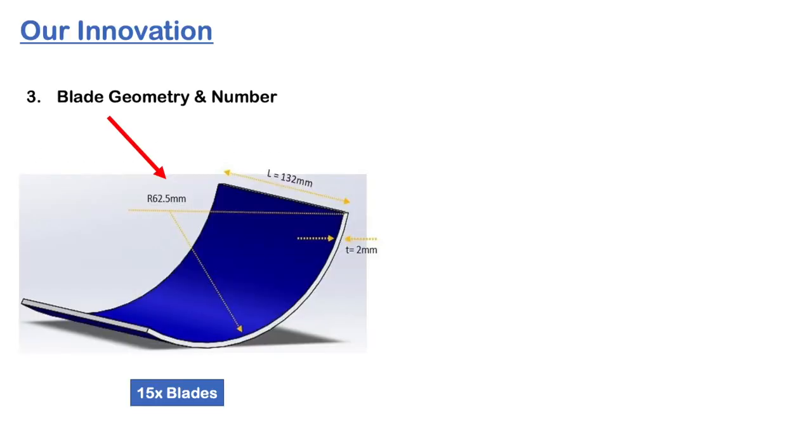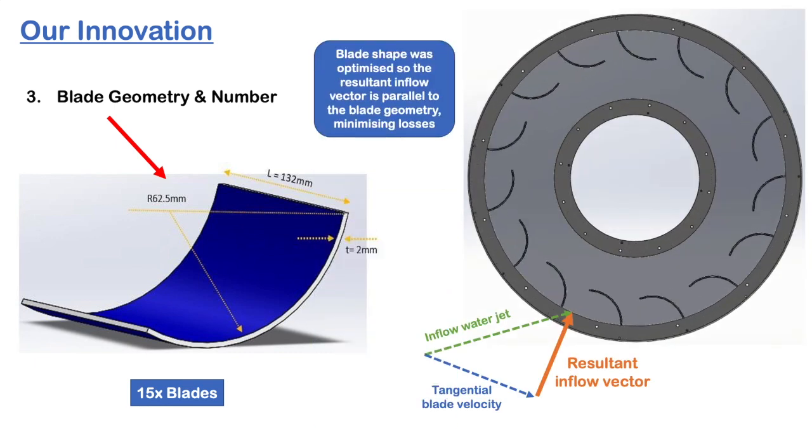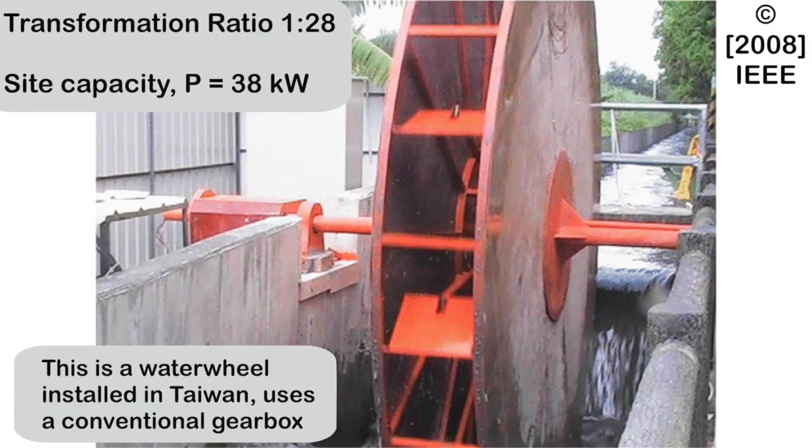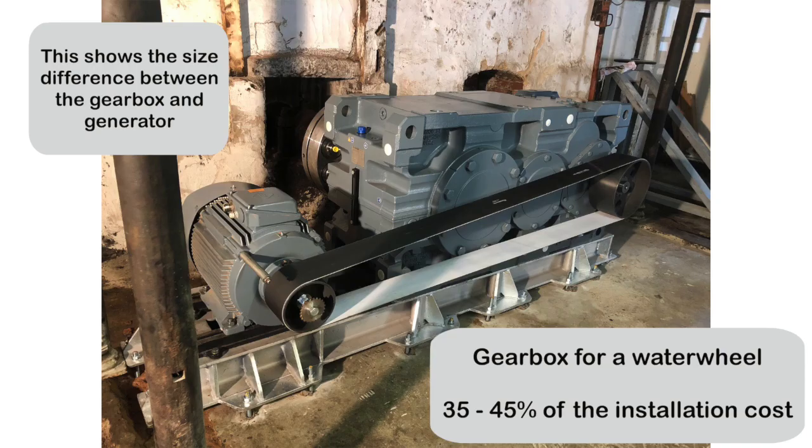We analyzed and optimized the geometry and the number of blades of the wheel so the inflow vector would be parallel to the blade shape to minimize losses during the transfer of energy. At full scale, the hydro wheel is too slow for a generator, so gearing is needed to match the speeds.